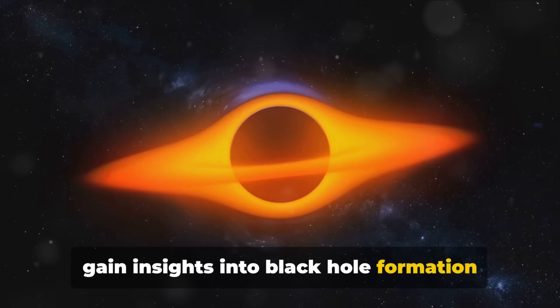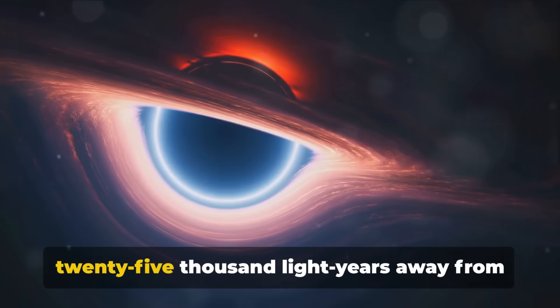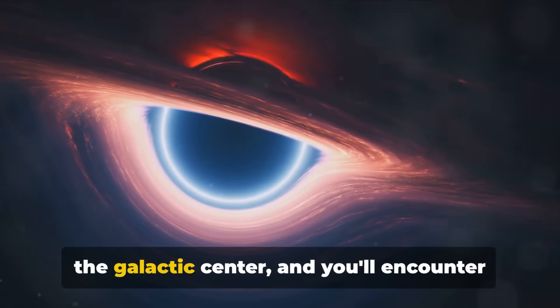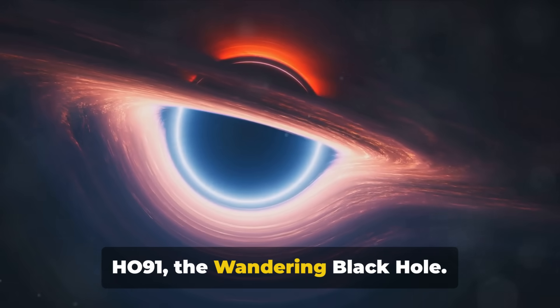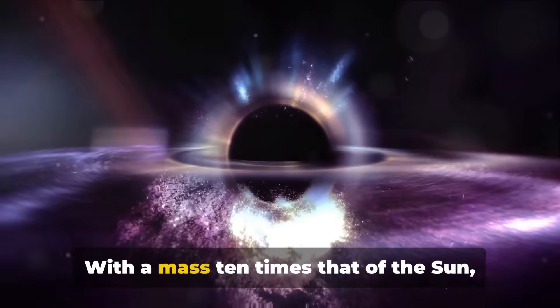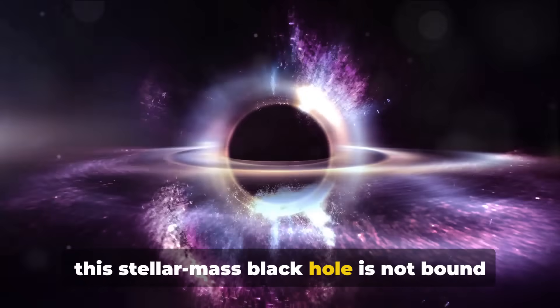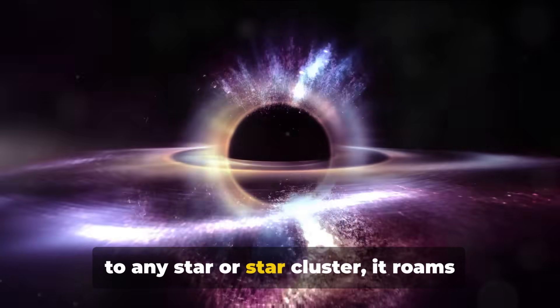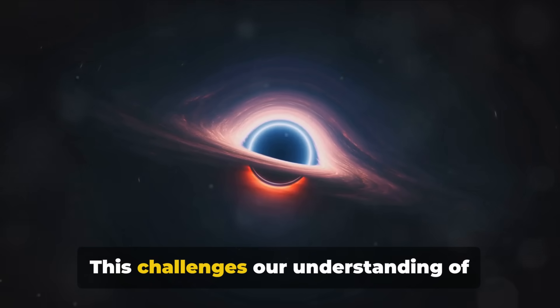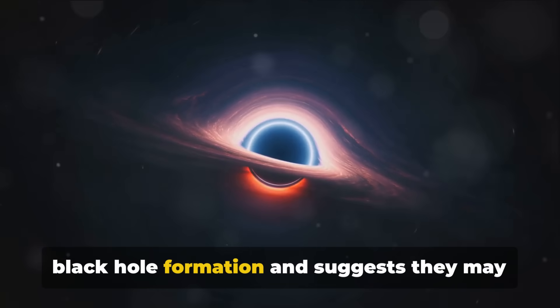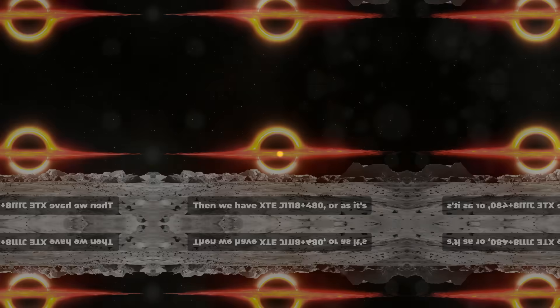Venture further into the cosmos, about 25,000 light years away from the galactic center, and you'll encounter HO 91—the wandering black hole with a mass 10 times that of the sun. This stellar-mass black hole is not bound to any star or star cluster; it roams freely across the galaxy. This challenges our understanding of black hole formation and suggests they may be more mobile than previously thought.